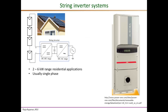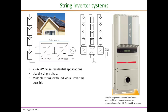String inverters are used in residential rooftop applications, typically single phase in the range of 2 to 6 kilowatts. The name comes from the fact that these inverters interface a string of series-connected PV modules to the grid. Multiple strings on a rooftop can each be connected to an individual string inverter, providing maximum power tracking for each string separately. String inverters provide string-level MPPT, which is better than central inverters, but still not optimal compared to microinverters.